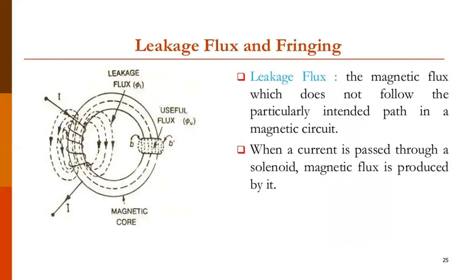The topic to be discussed now is leakage flux and fringing. In an electric circuit we always speak of leakage current; similarly, leakage flux exists. Most applications using magnetic effects of electric current use flux in the air gap for their operation. Such devices are generators, motors, and measuring instruments like ammeters and voltmeters. These devices consist of magnetic circuits with an air gap, and flux in the air gap is used to produce the required effect.